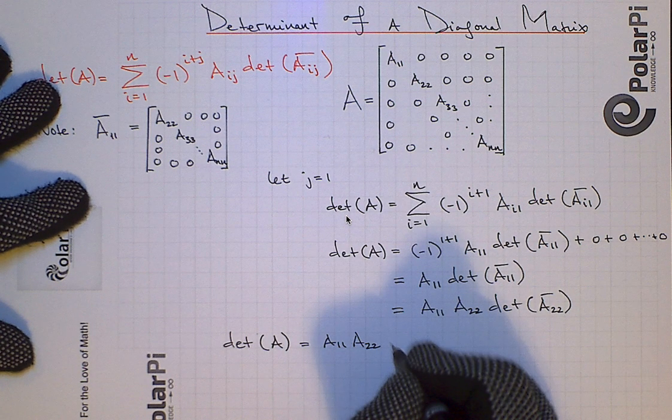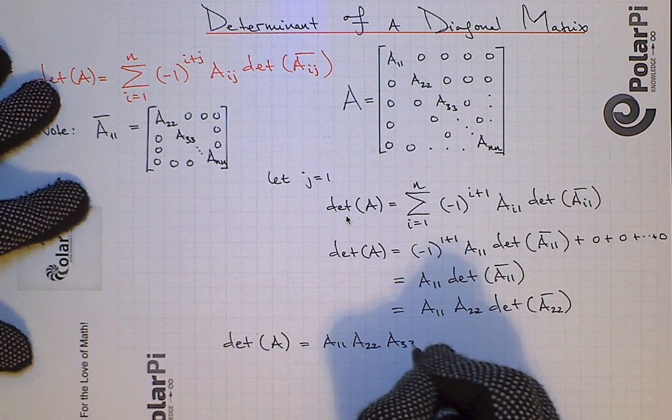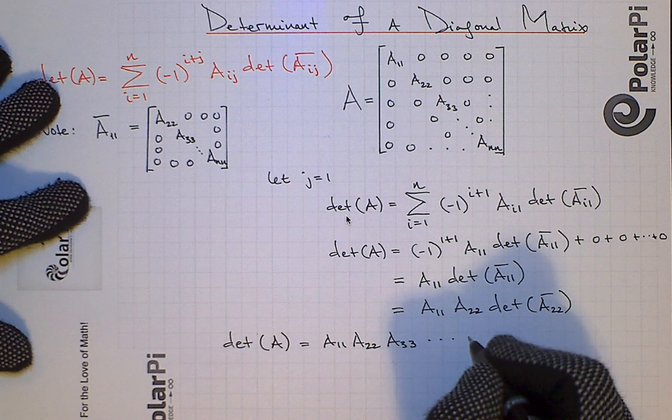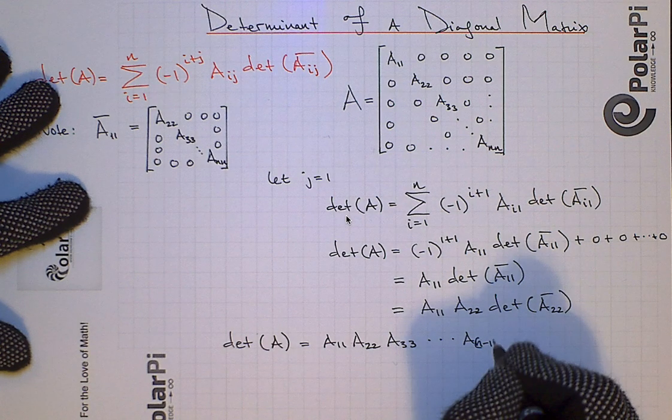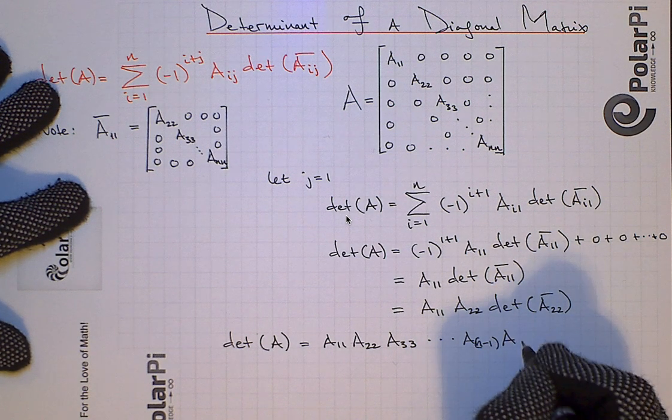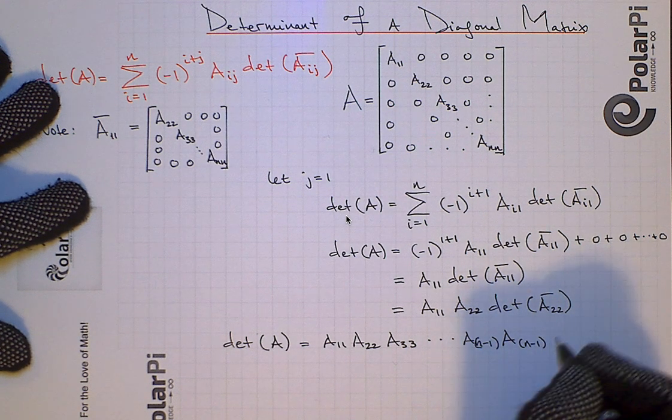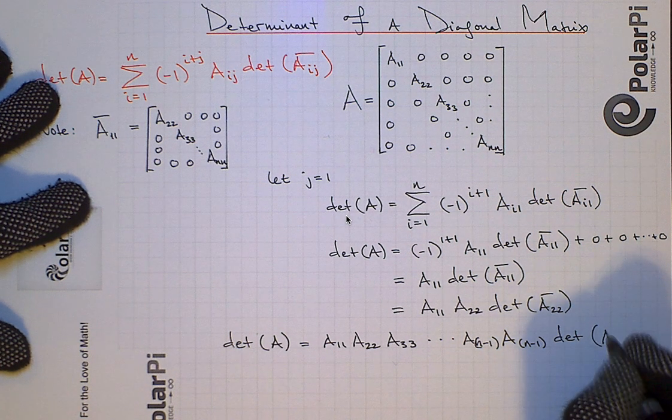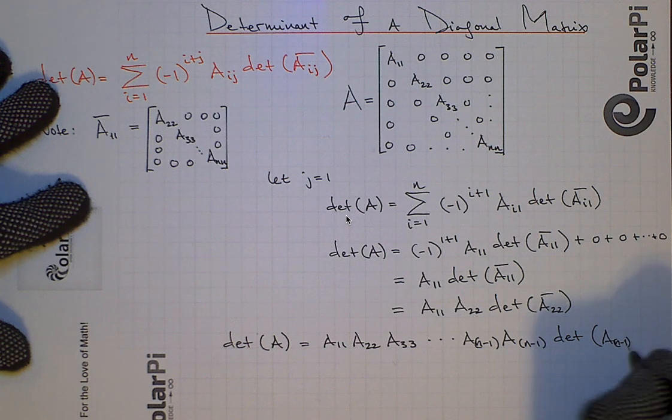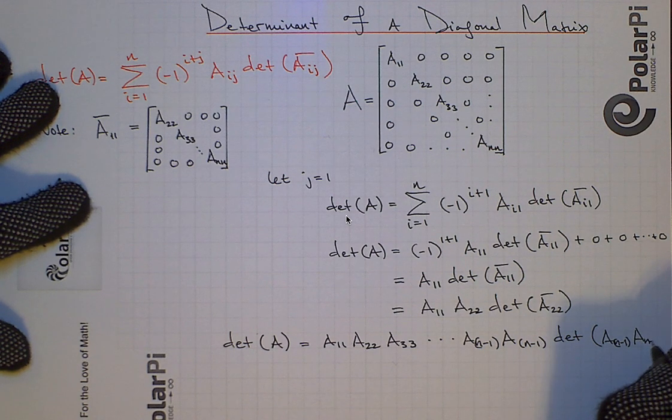and then A33, you get it, A44 dot, dot, dot, and then finally, we'll be able to write A n minus one, A n minus one, times the determinant of A n minus one, A n minus one bar.